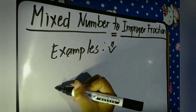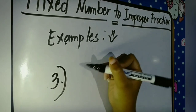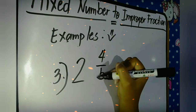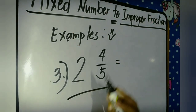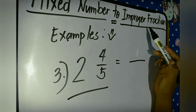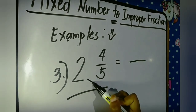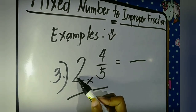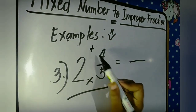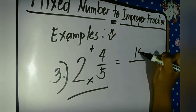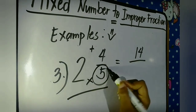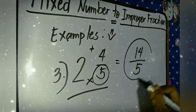Example number three is two and four fifths. Again, it is a mixed number and we're going to rewrite it into an improper fraction. Five times two is ten, plus four is fourteen. Copy the denominator five.